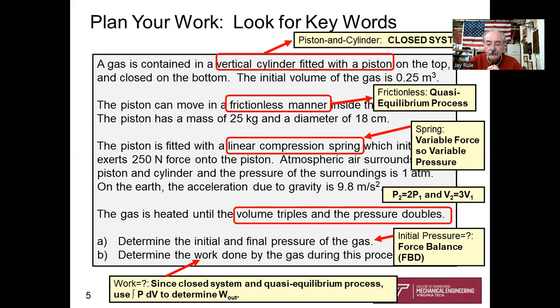Given information: the volume triples and the pressure doubles, very predictable on what you're trying to find. Part A, initial and final pressure, you're going to be using that free body diagram for this to determine the pressures. And then finally, the work done. Since you've read the problem, you say, we're asking for the work done, I've got a closed system, quasi-equilibrium process, I'm going to use integral of P dV to determine work out.